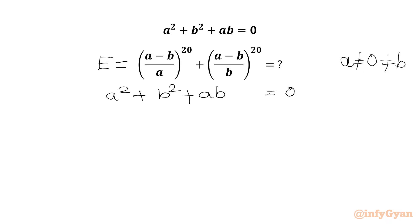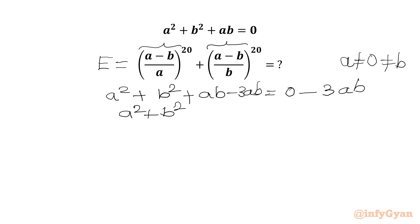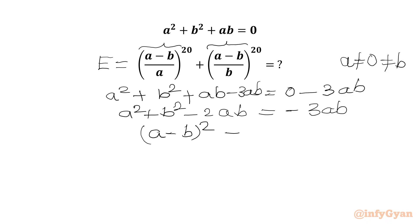Now I will subtract 3ab from both sides. This side will also subtract 3ab. Since (a-b)² is here, we will write a² + b² - 2ab = -3ab. So the left-hand side gives us (a-b)² and the right-hand side is -3ab.